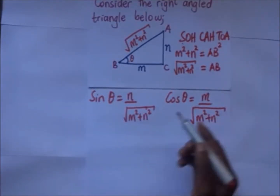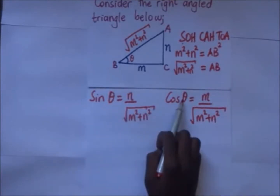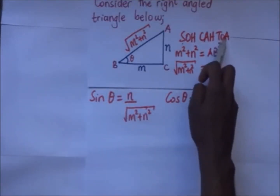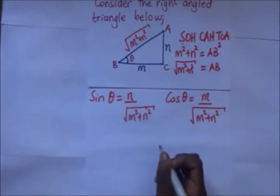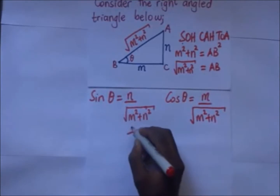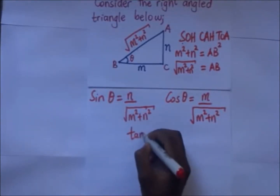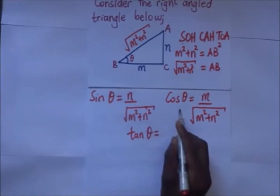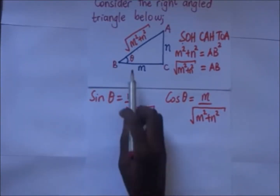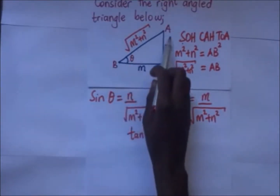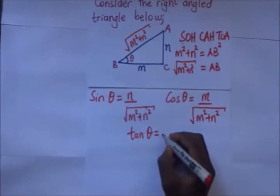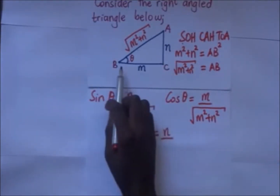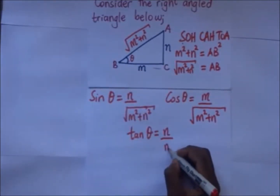Then for tan: tan of theta is equal to opposite over adjacent. So the tangent of theta is going to be equal to the opposite, which is N, over the adjacent, which is M.